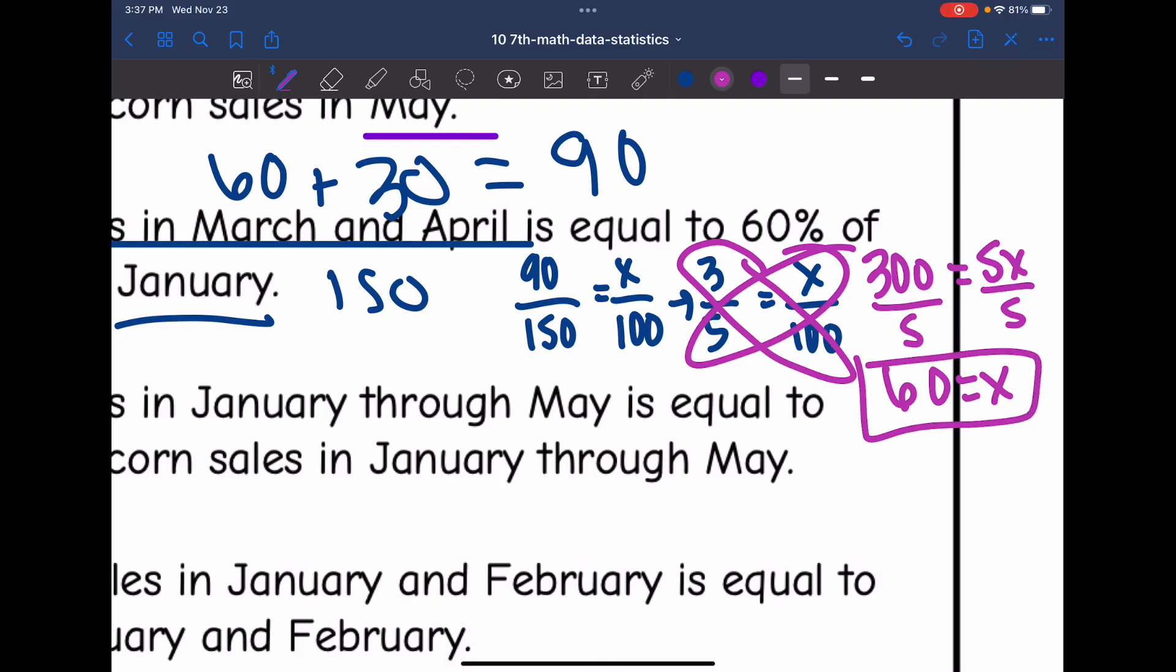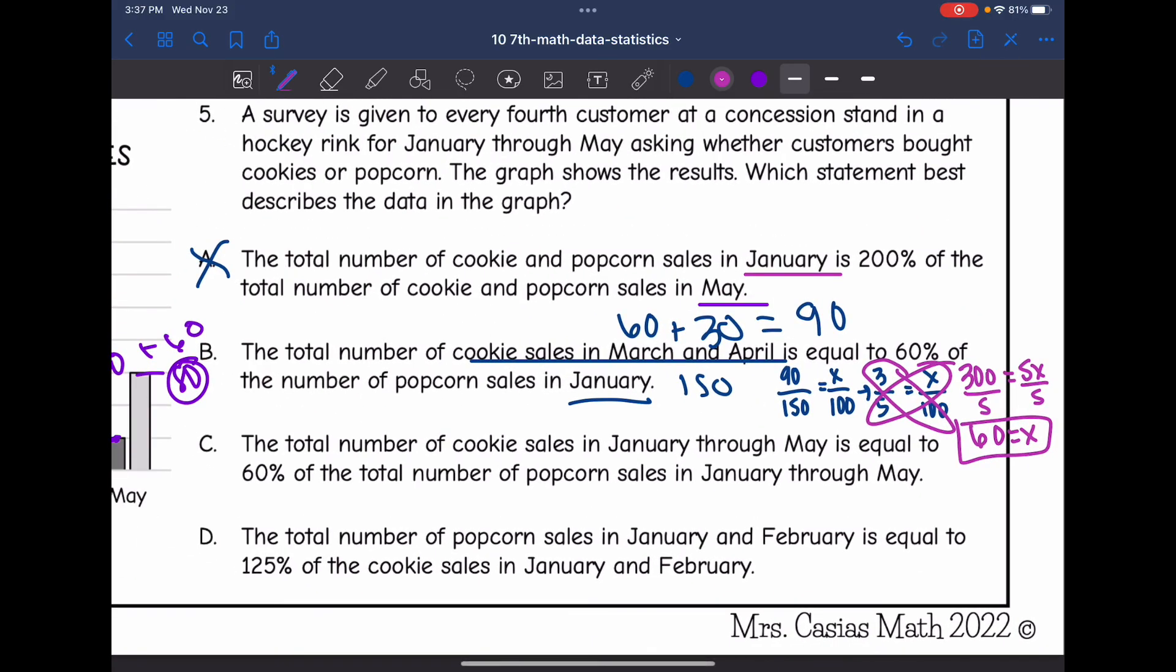So that one would be true. The total number of cookie sales in March and April is equal to 60% of the number of popcorn sales in January.